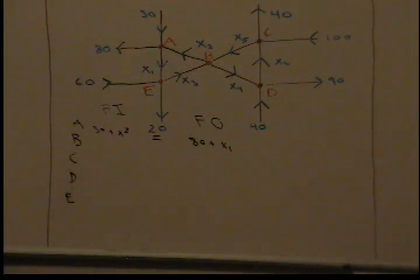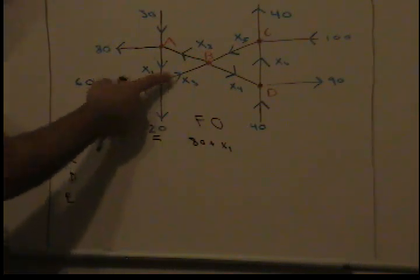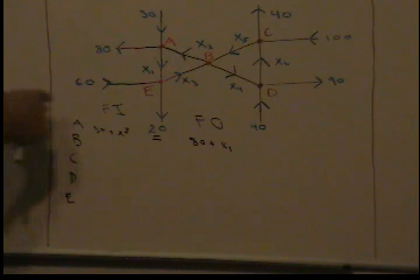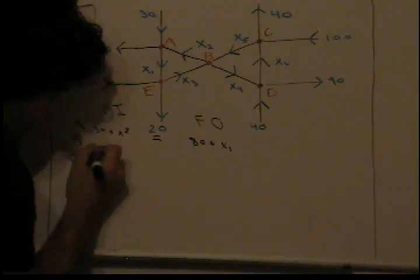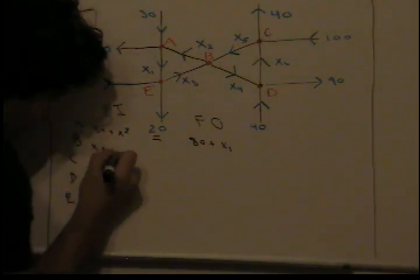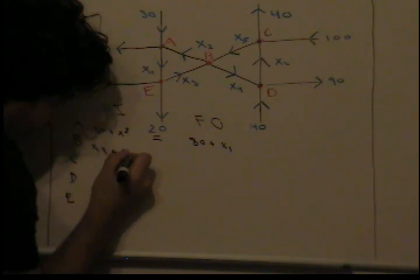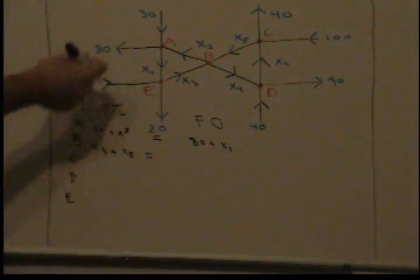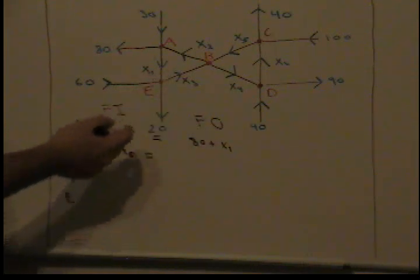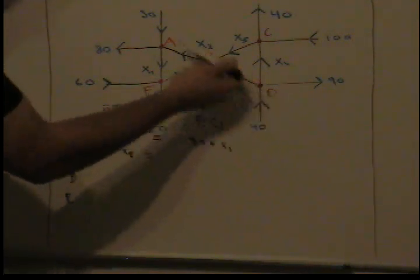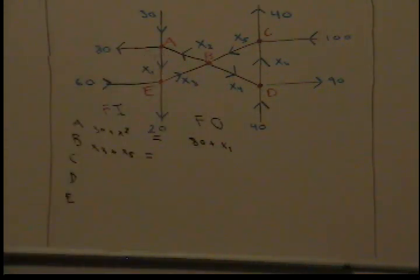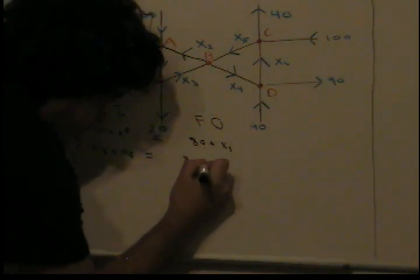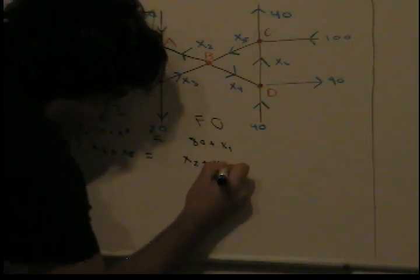Now node B. What flows into node B? x3 and x5 flow into node B, so we say x3 plus x5. What flows out of node B? x2 and x4 flow out, so we say x2 plus x4.